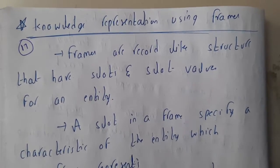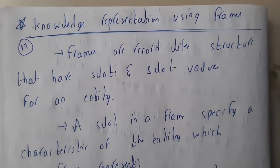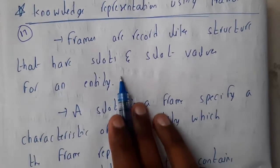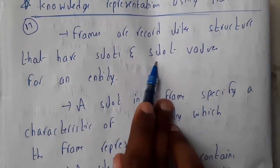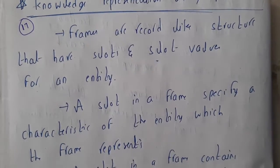It is almost similar to that. Frames are record-like structures that have slots and slot values for an entity. So for an entity, we will be having a slot and inside that we will be writing the slot values.